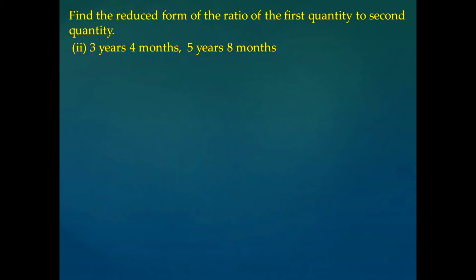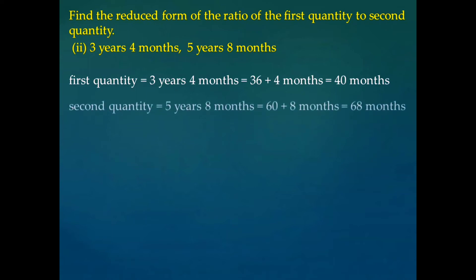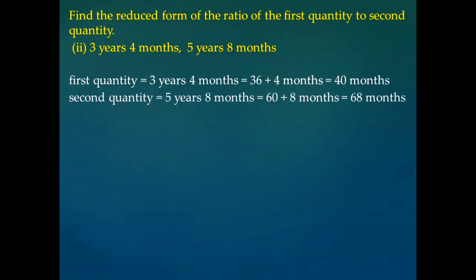Let us convert these quantities in months. The first is 3 years and 4 months. So 3 years are converted into 36 months, as in a year there are 12 months. And 4 extra months are there, so we add 36 plus 4, that is 40 months.